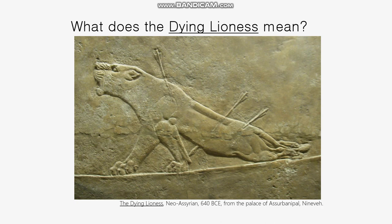Both friezes were meant to represent the idea that Ashurbanipal was a terrifyingly powerful and vicious ruler that no one should try to stand up against — worthy of being called 'King of Kings.' Hunting lions was considered a duty and sport only for kings. Yet when many of us see this image, we can't help but feel it is an image of sympathy — where the artist seems sympathetic toward the suffering lioness, not toward Ashurbanipal.